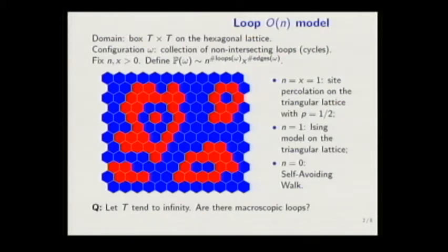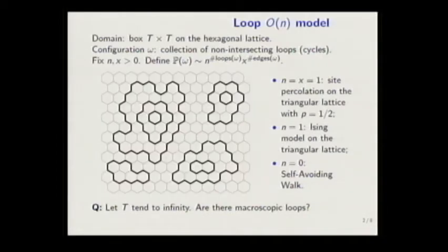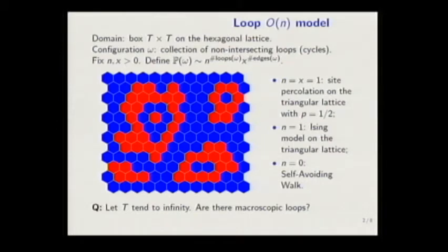In here, p is equal to one half. So, and in fact, if we take in general n equals one, we obtain the Ising model if we don't fix the value of x. Ising model on a triangular edges. Because here again, n will not contribute. And the only number of edges is important. If we take x below one, it will be ferromagnetic Ising model. And x greater than one, it's the anti-ferromagnetic Ising model.